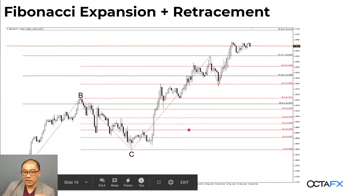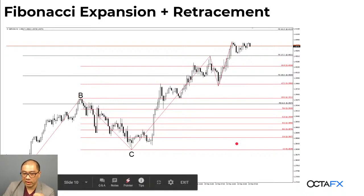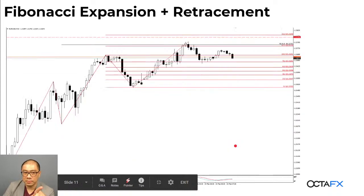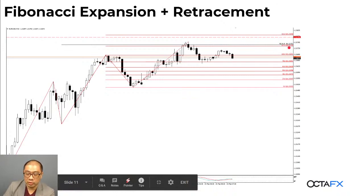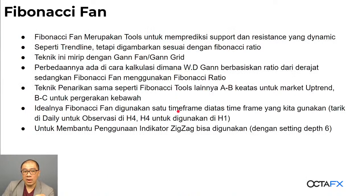Ini adalah alasan kenapa jangan digabungkan expansion dan retracement — karena kita akan melihat overlap harga dan level-level yang hampir mirip. Jadi pilih salah satu. Contohnya kayak 61.8 itu bisa menjadi 127.2 di retracement extension.